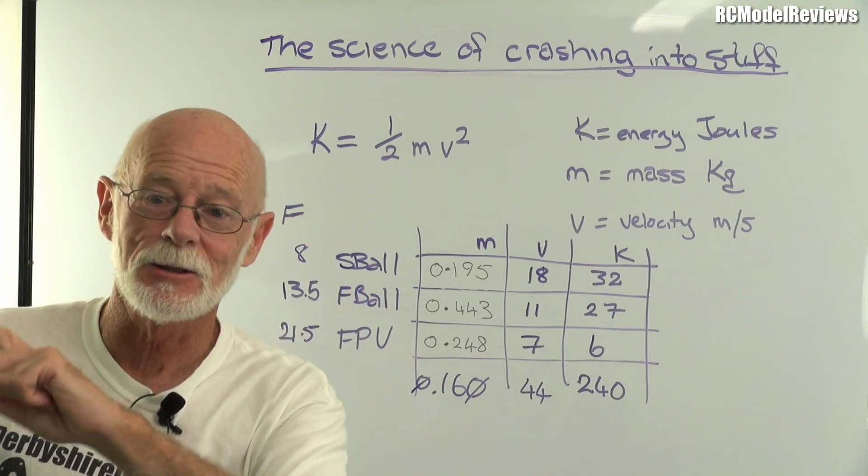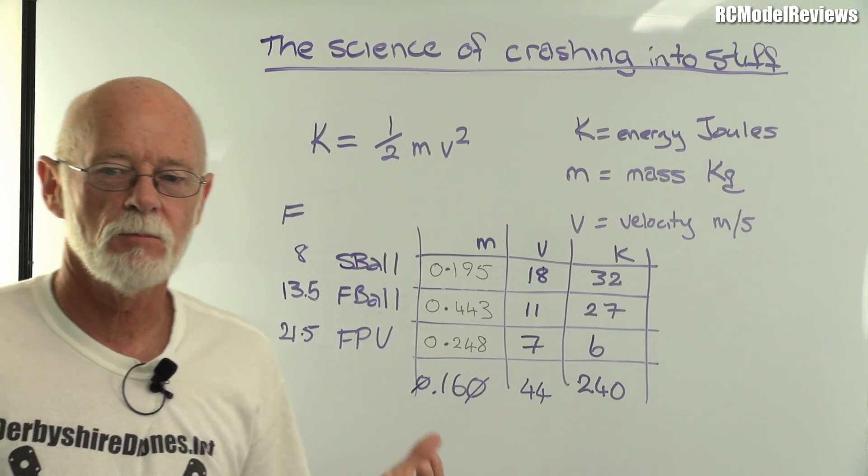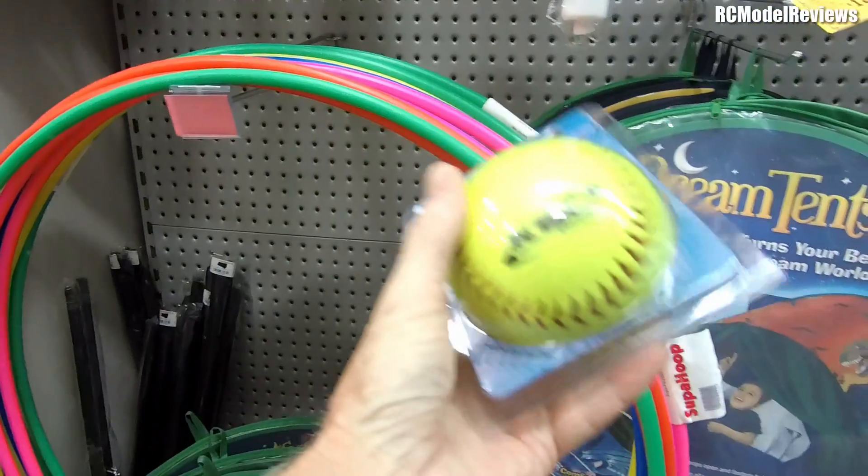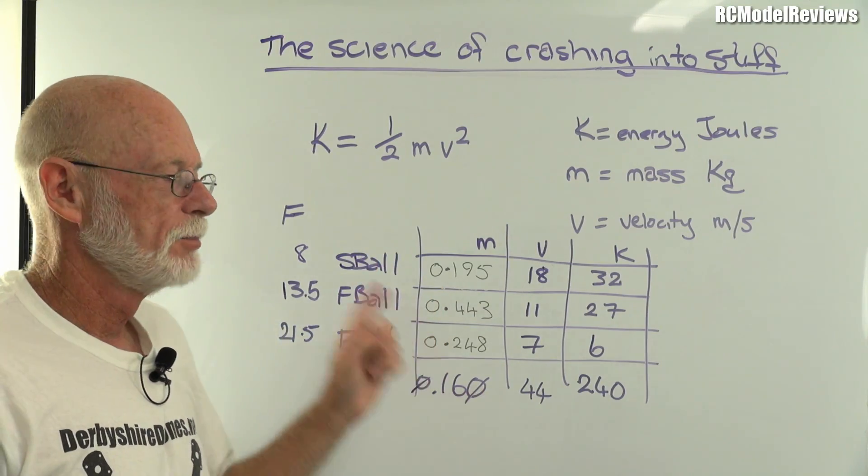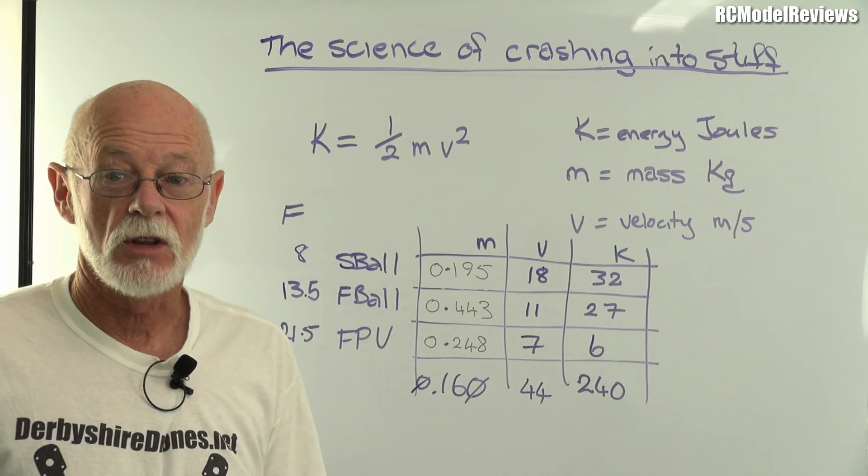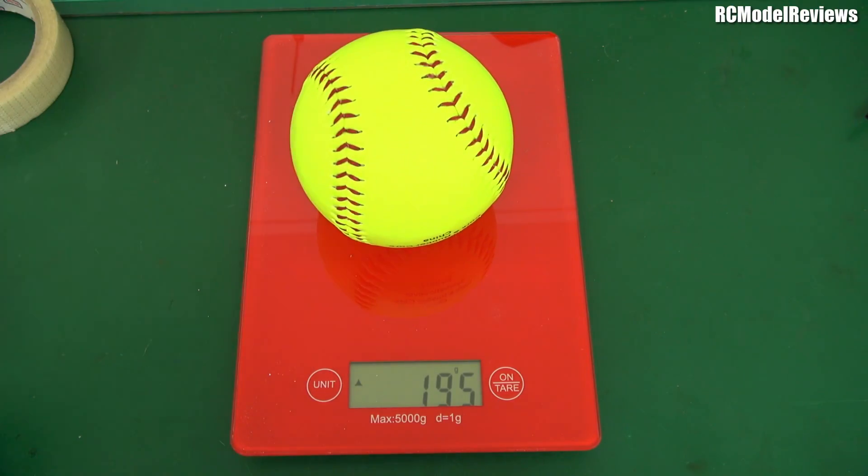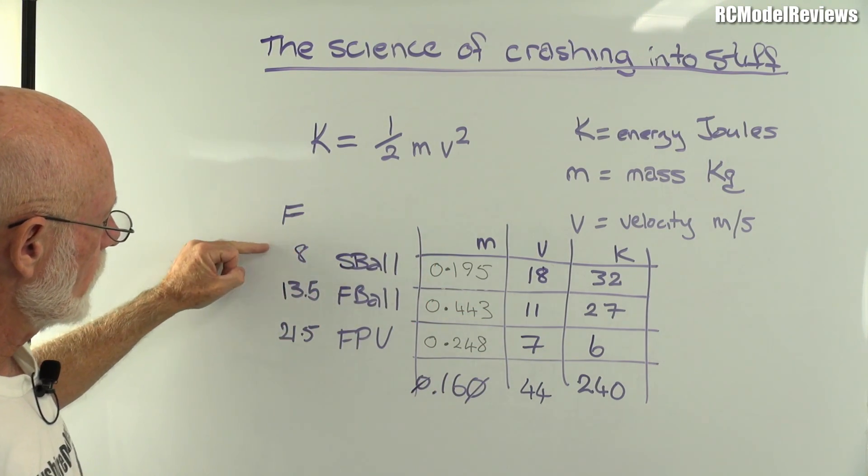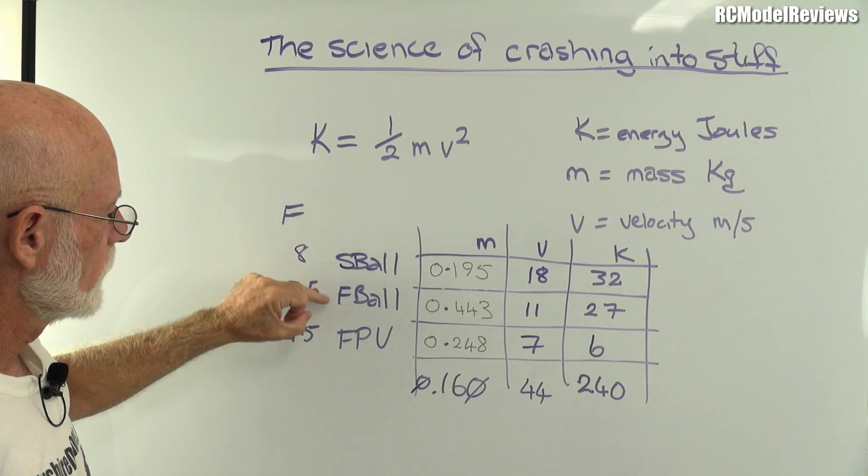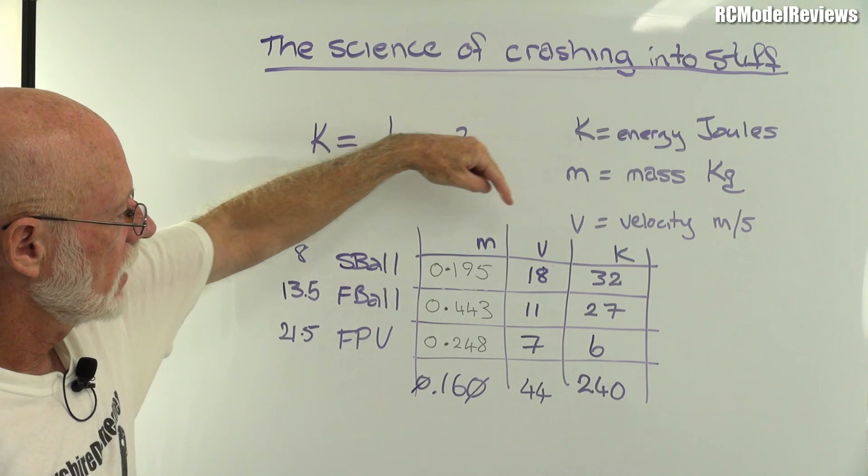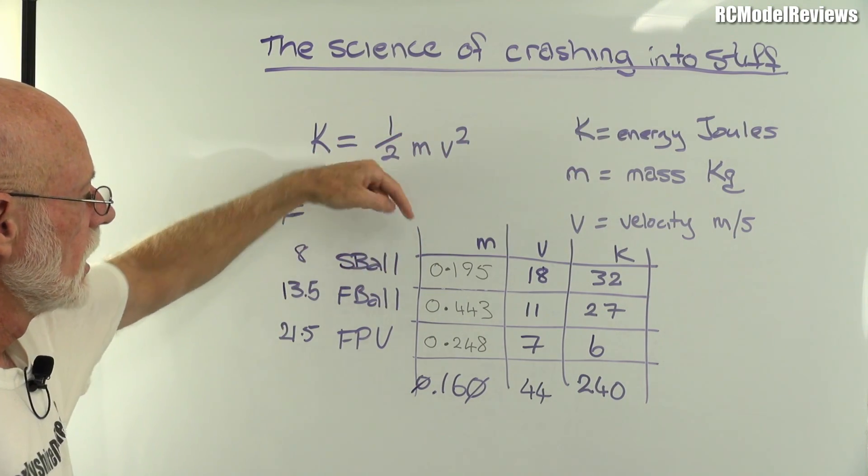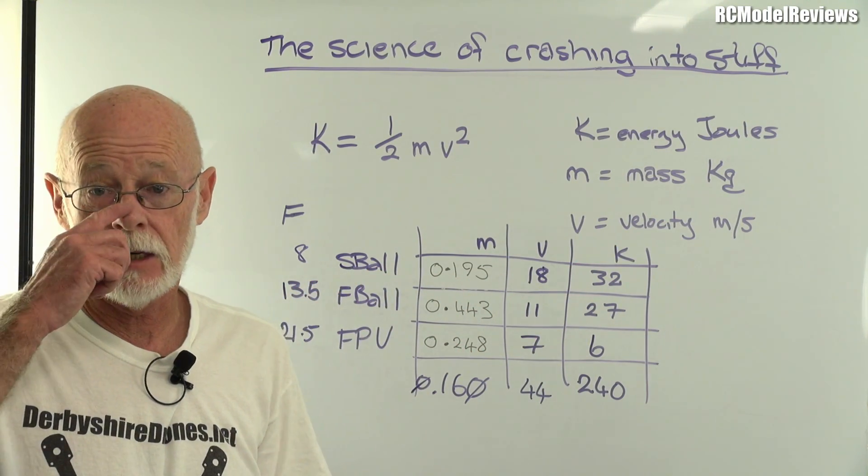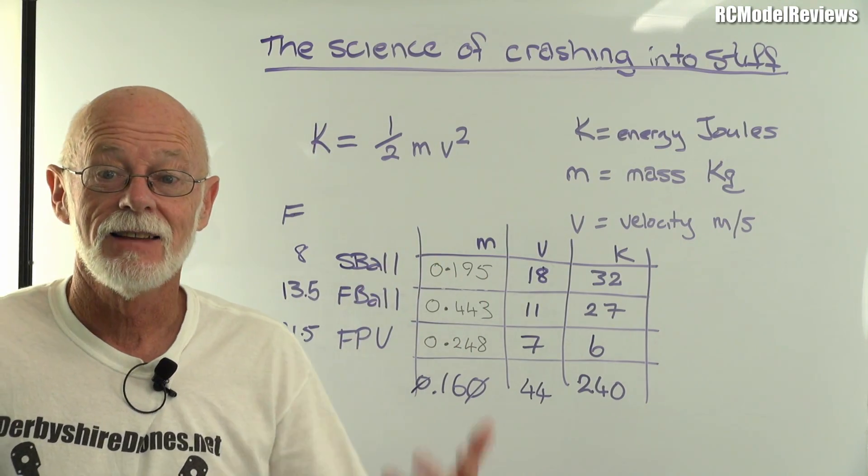We can measure mass with scales, so I got my lovely softball. I couldn't find the one I had so I bought a new one from the local department store. I threw it on the scales and they told me that the softball weighed 195 grams. Here's our little matrix with the three objects we're looking at: the softball, the football, and the FPV model. In the columns I've got the mass and the velocity, and then I've calculated the energy. In mass, we're measuring kilograms, so that softball weighed 195 grams, which is 0.195 kilograms.